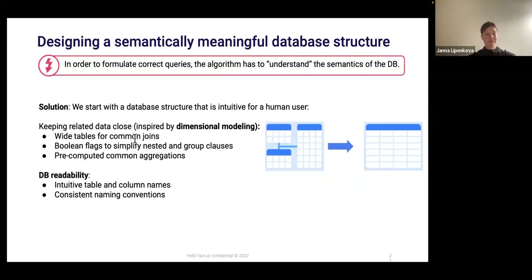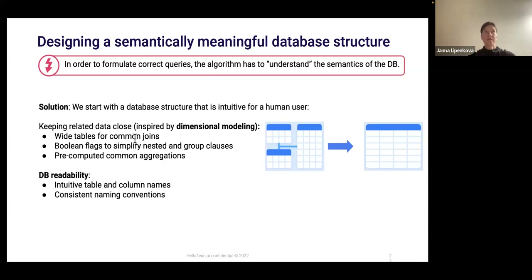The third challenge is how to design a semantically meaningful database structure for text to SQL. We found that in order to formulate correct queries — not just simple ones, but also more complex questions — the algorithm has to understand the semantics of the database. This was initially an intuition, but we tested these optimizations and saw it contributes to increasing accuracy. Our approach here is quite simple: we start with a database structure that is intuitive for a human user, based on the assumption that language models also use language and should have significant overlap with how humans deal with linguistic and database structures.